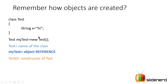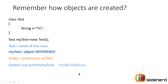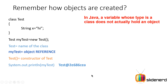And 'new' is a special keyword that creates memory in Java. Let's take a look at what happens if we try to print the contents of this variable. If you had said int x = 7 and then System.out.println(x), it prints 7. But if you print myTest, it prints something very weird — something like test@2e686ce8.